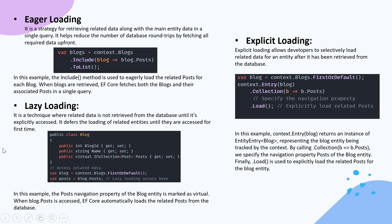Lazy loading is a technique where related data is not retrieved from the database until it's explicitly accessed. It defers the loading of related entities until they are accessed for the first time. You first get your blogs with FirstOrDefault, and then when you access the blog's posts, lazy loading automatically fetches them. The Posts navigation property of the Blog entity is marked as virtual — when blog.Posts is accessed, EF Core automatically loads the related posts from the database.